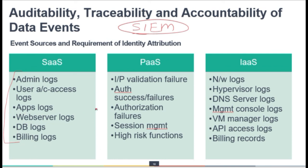In the PaaS service model, some events to collect include input validation failure, authentication success or failure, authorization failure, session management, and high-risk functions — for example, password handling or payment processing. In the PaaS model, the customer has more control than in SaaS, and the CSP exposes some infrastructure-level event sources and diagnostic information.